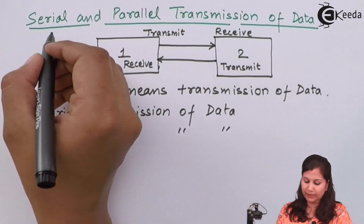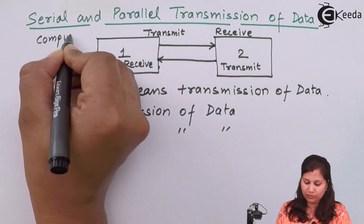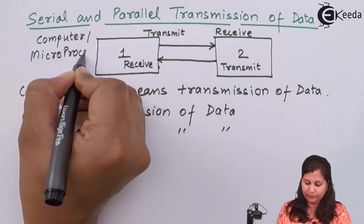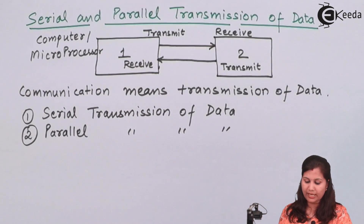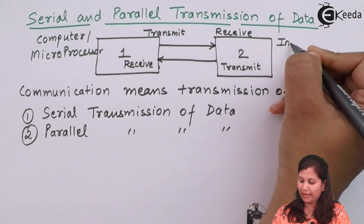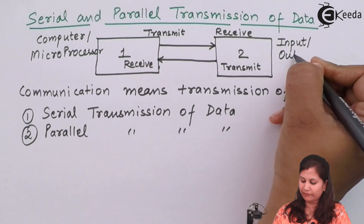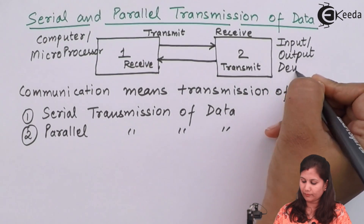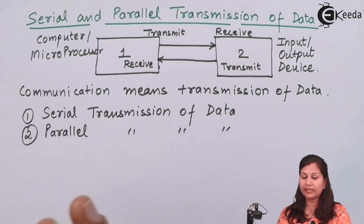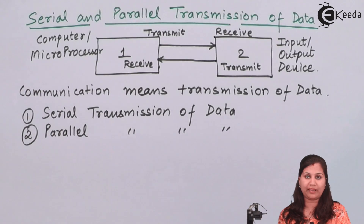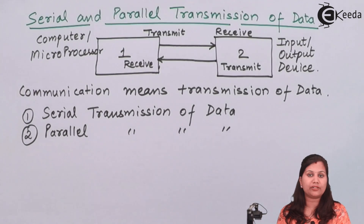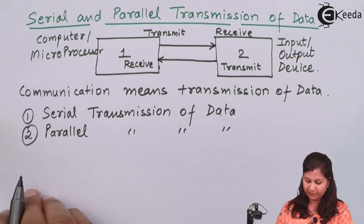Component one can be a computer or a microprocessor — any kind of programmable component — and at the other end we can have any input or output device. So whenever a computer or microprocessor is communicating with input/output devices, also called peripheral devices, they can either use serial transmission or parallel transmission of data.